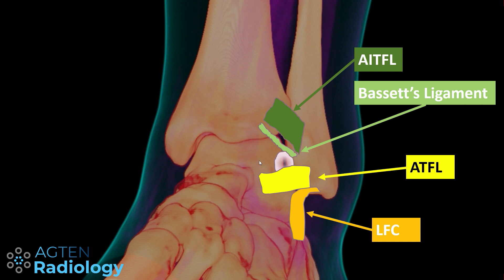Here in this diagram I'll give you a quick anatomy recap. If you want to know more about these ligaments, I suggest you watch my corresponding videos — links are in the description below. This white mass here is indicating the space-occupying lesion in the anterolateral gutter.